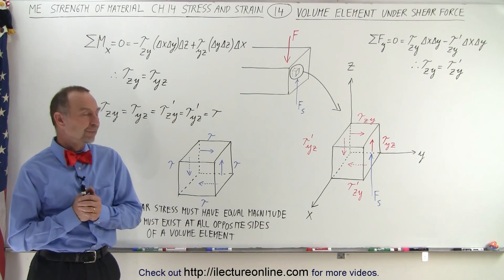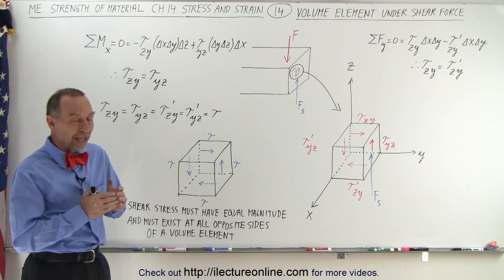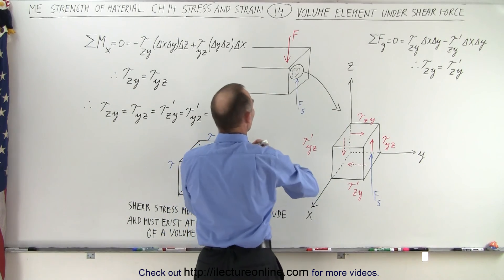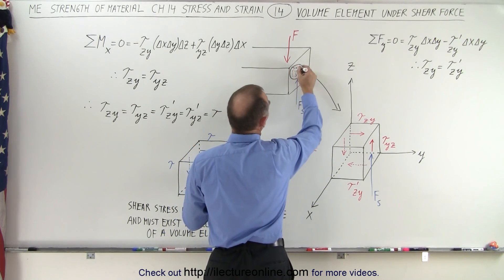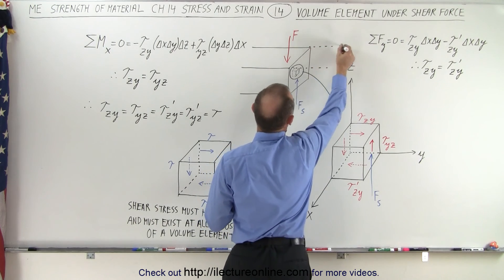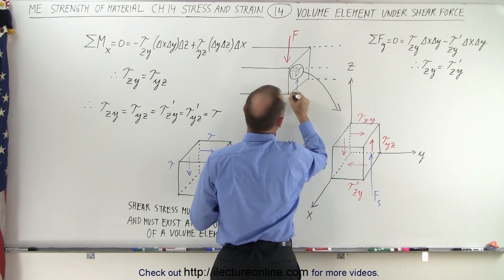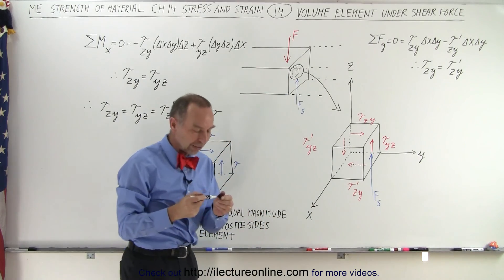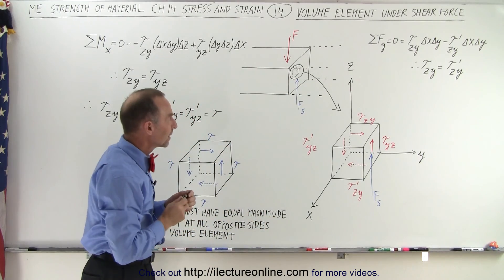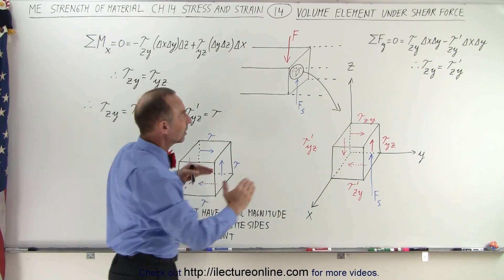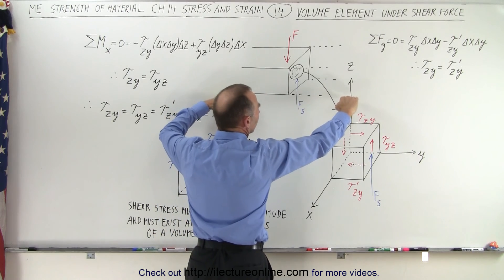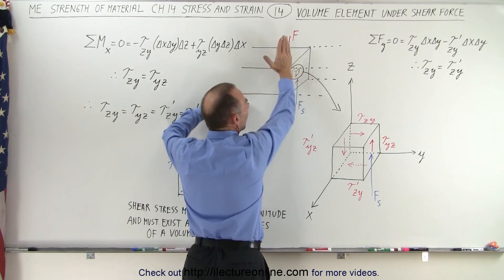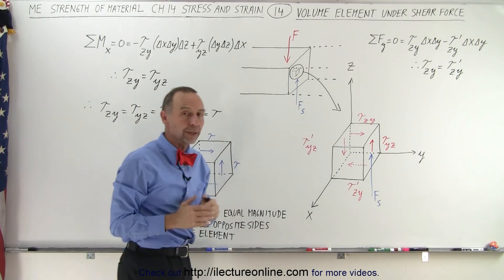Welcome to our lecture online. Let's say that we have a beam continuing in both directions. We apply a force onto the beam at the top, and if the beam is supported somewhere, there'll be a shear force inside the beam to compensate for the force that's applied to the beam.